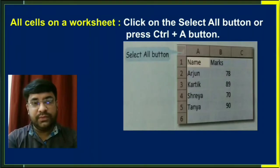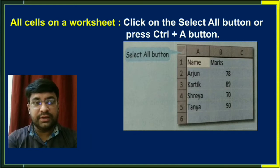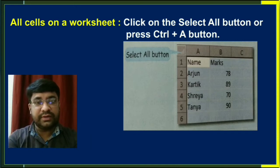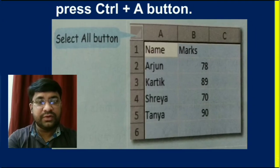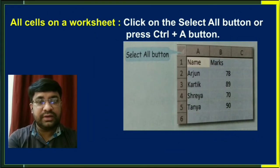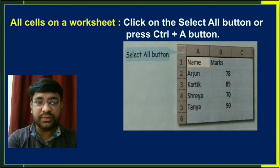If you want to select all cells on a worksheet, then click on the Select All button. The Select All button is available at the top left corner of the worksheet, as you can see in the diagram, or you can use the shortcut key Ctrl+A from your keyboard.